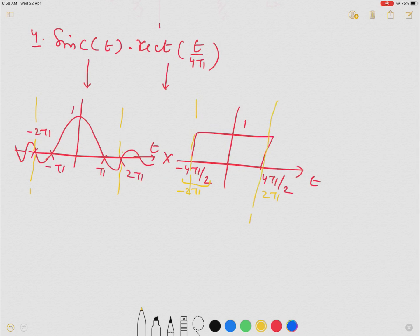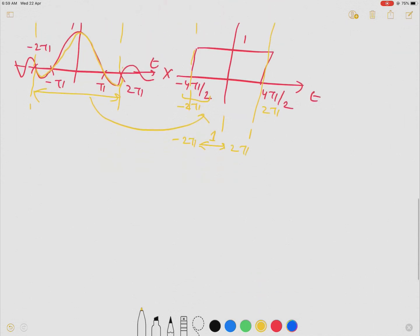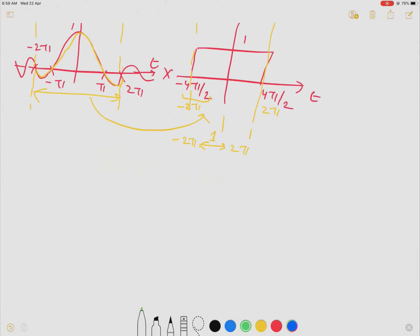Now during minus 2 pi to 2 pi, this signal will be multiplied by this signal whose value is 1. Between minus 2 pi to 2 pi, value of this signal is 1. And value of, or shape of this signal is 1. So when we solve, we will get a result that is up to 2 pi only.